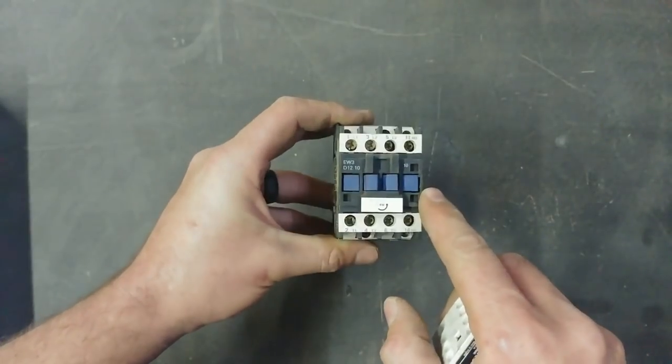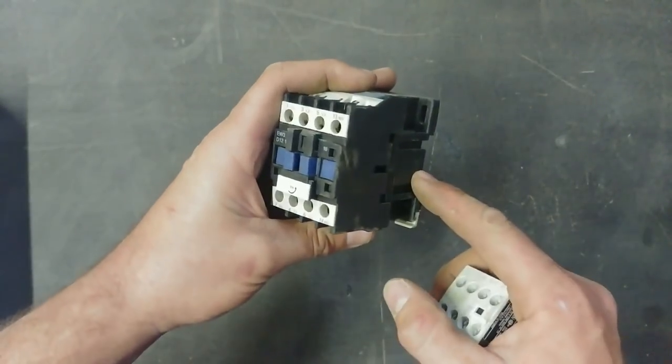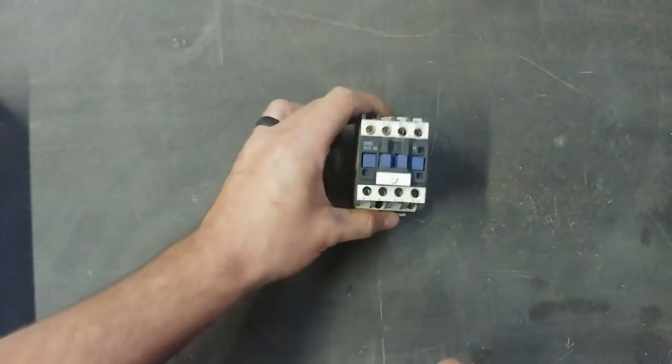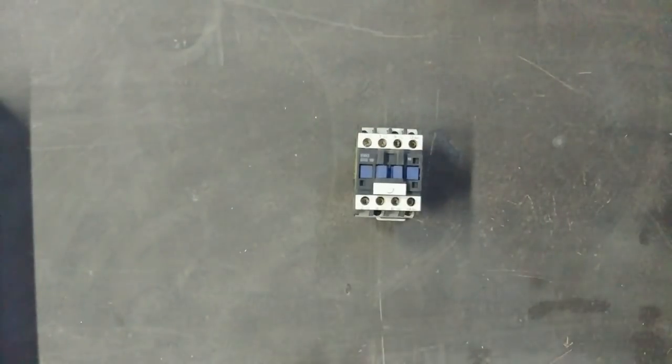And if it's normally closed, then in this position it should be on. So as soon as the contactor pulls it in, the normally open will switch on. The normally closed will switch off. It's just in its normal position, it's either on or off.